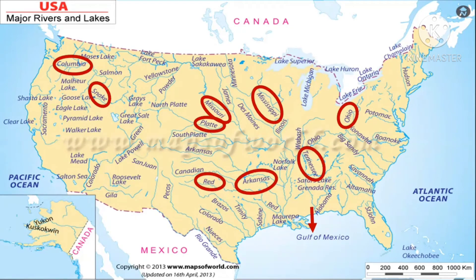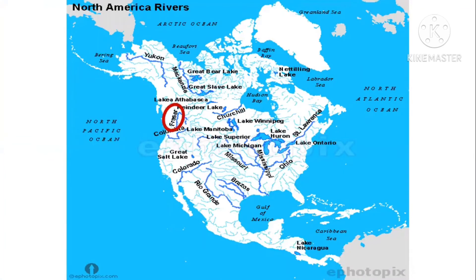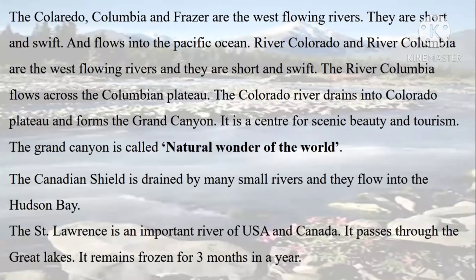Other rivers include the Snake, Fraser, Columbia, Yukon, Colorado, and Rio Grande. The Colorado, Columbia and Fraser are the west-flowing rivers. They are short and swift and flow into the Pacific Ocean. The River Columbia flows across the Columbian Plateau. The Colorado River drains into the Colorado Plateau and forms the Grand Canyon.